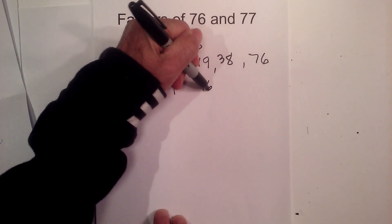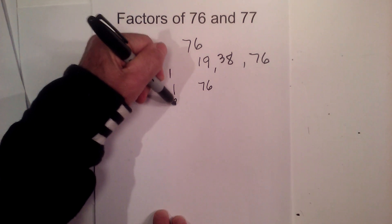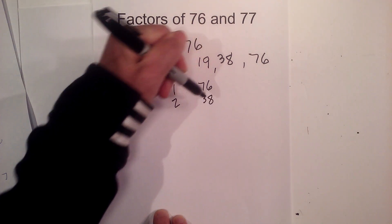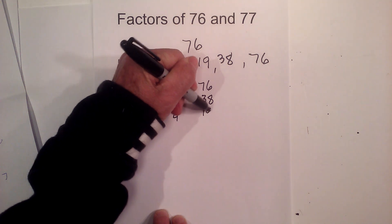And if you want pairs, you have 1 times 76, 2 times 38, and then 4 times 19.